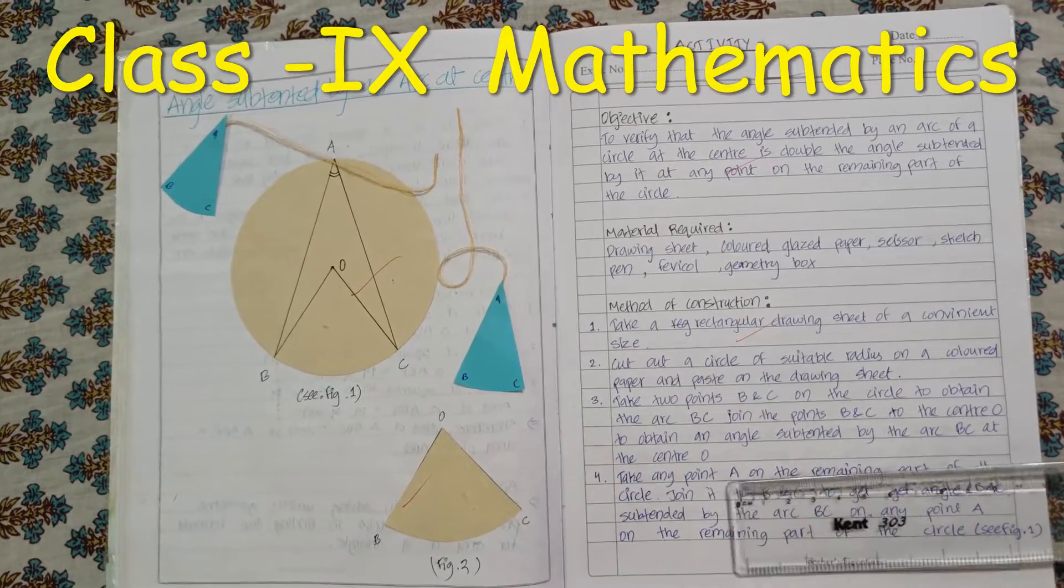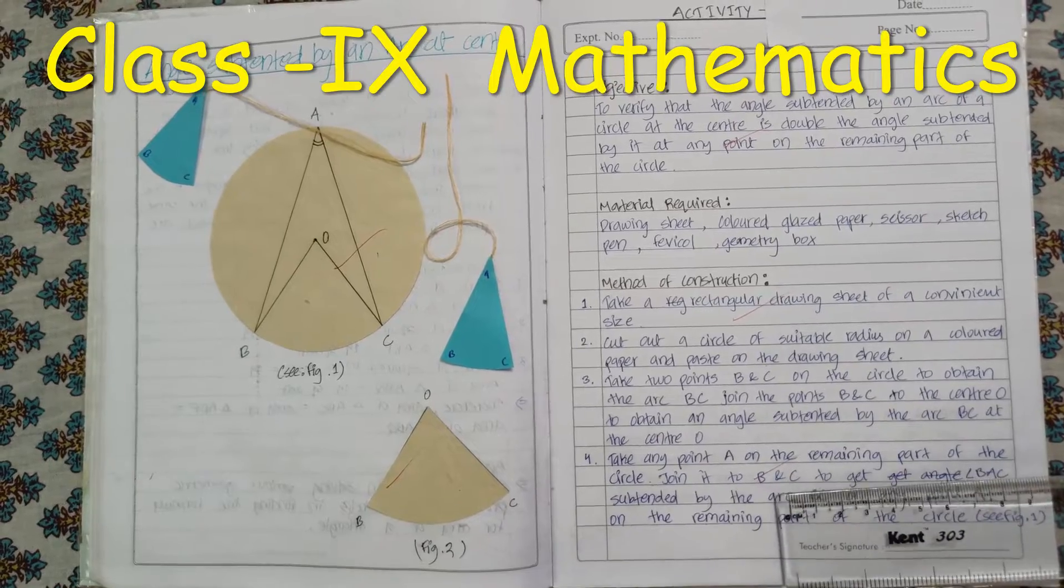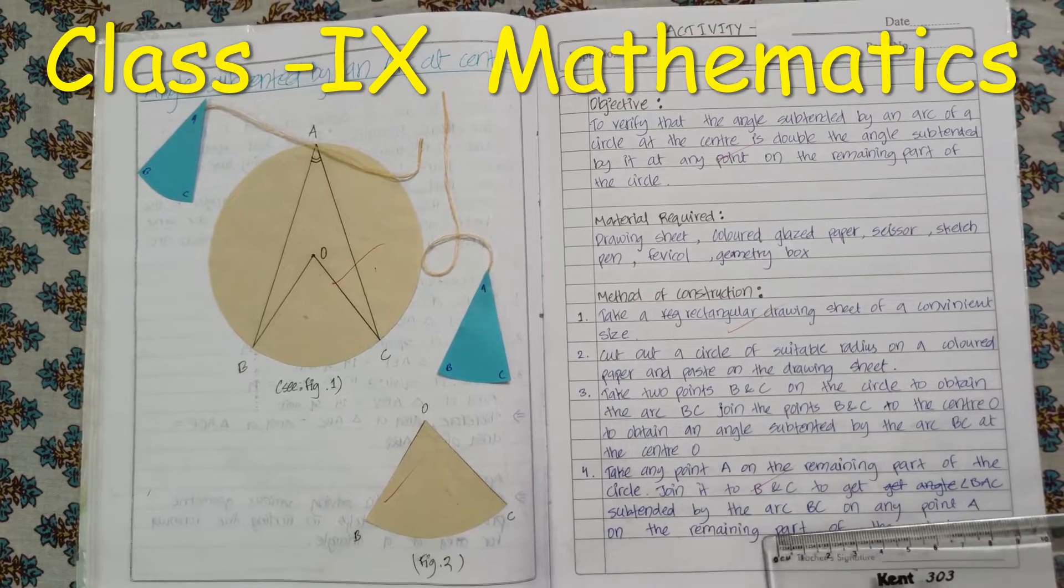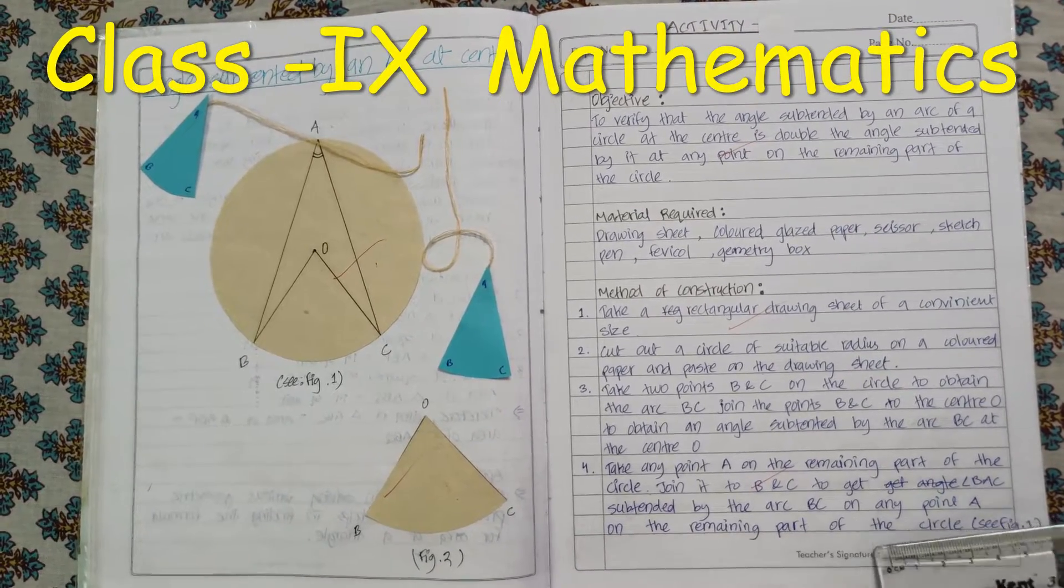Fourth, take any point A on the remaining part of a circle. Join it to B and C to get angle BAC subtended by the arc BC on any point A on the remaining part of the circle.